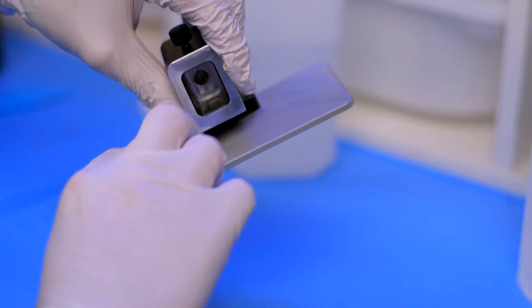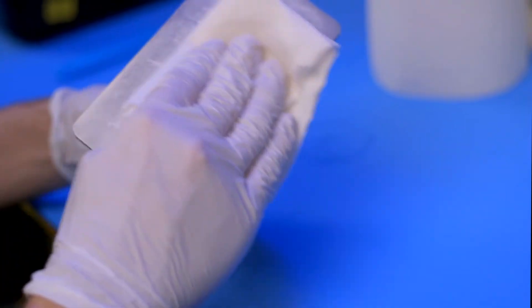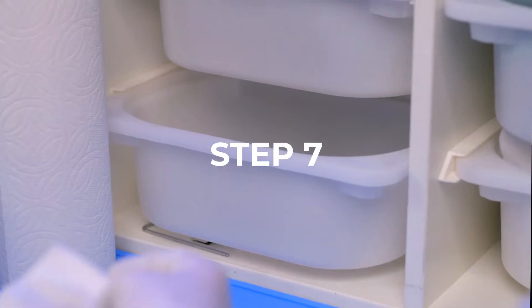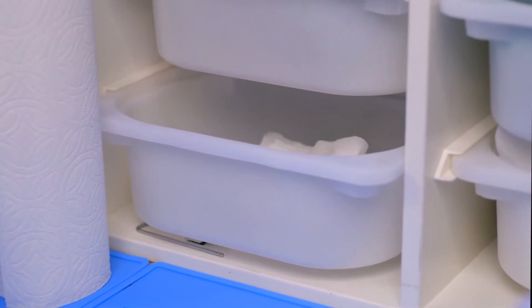Step 6: With a prepared isopropyl alcohol paper towel, wipe off the build plate again to remove any residue. Step 7: Set aside the used paper towels. We will discard these later.